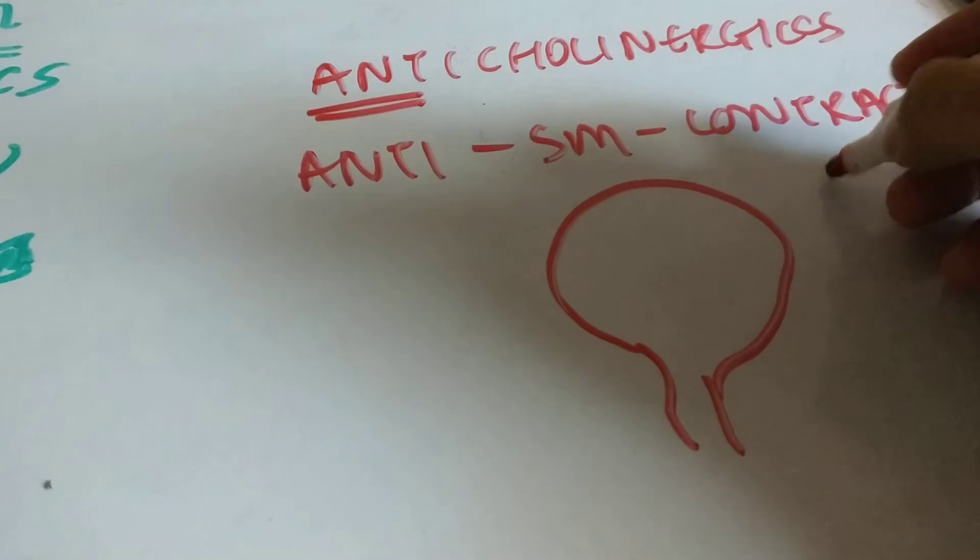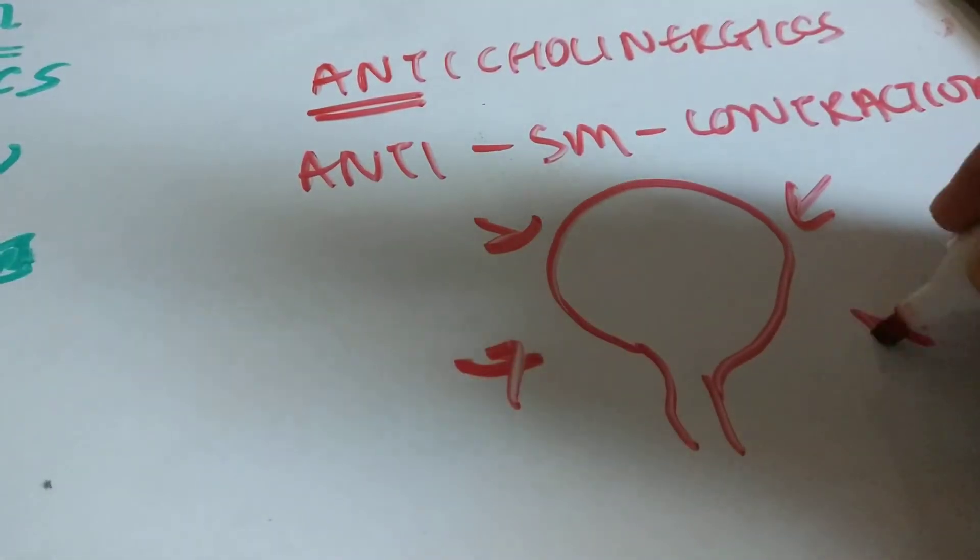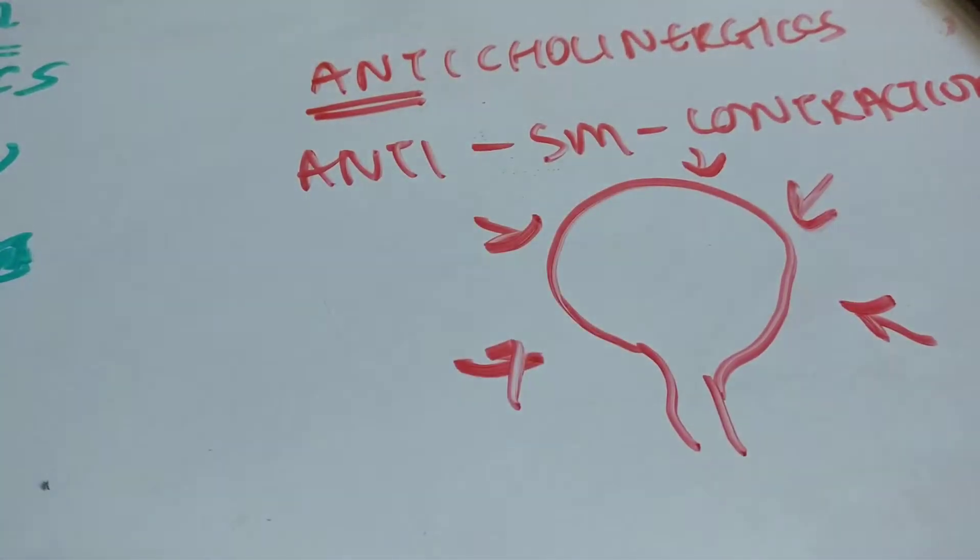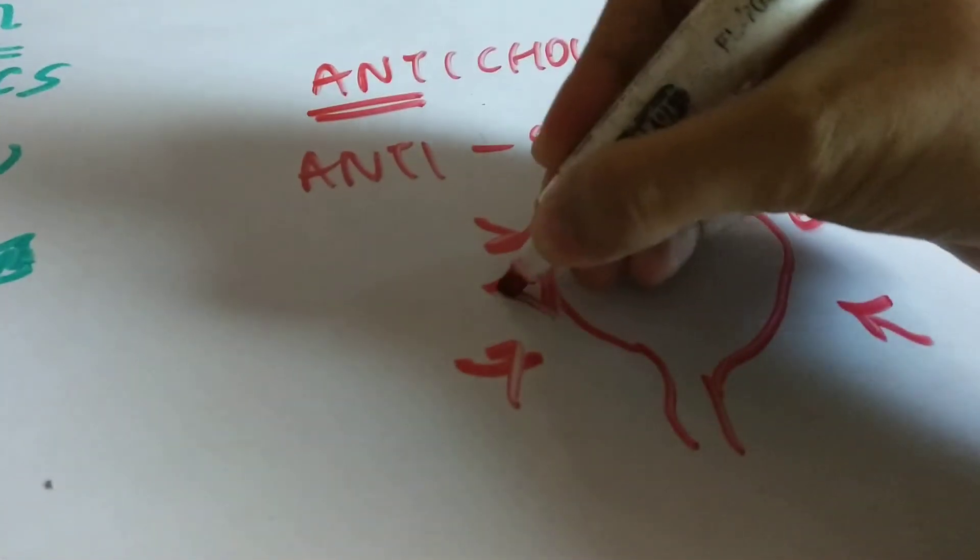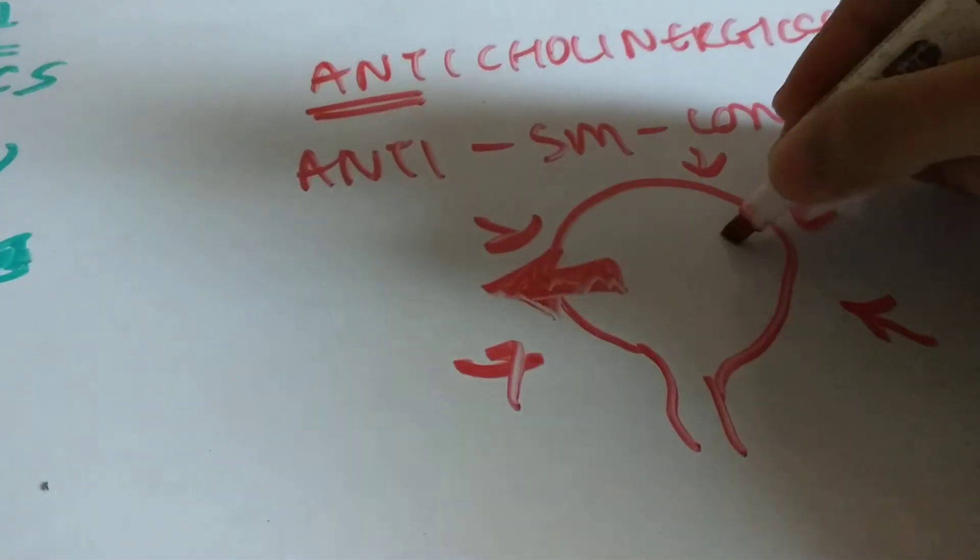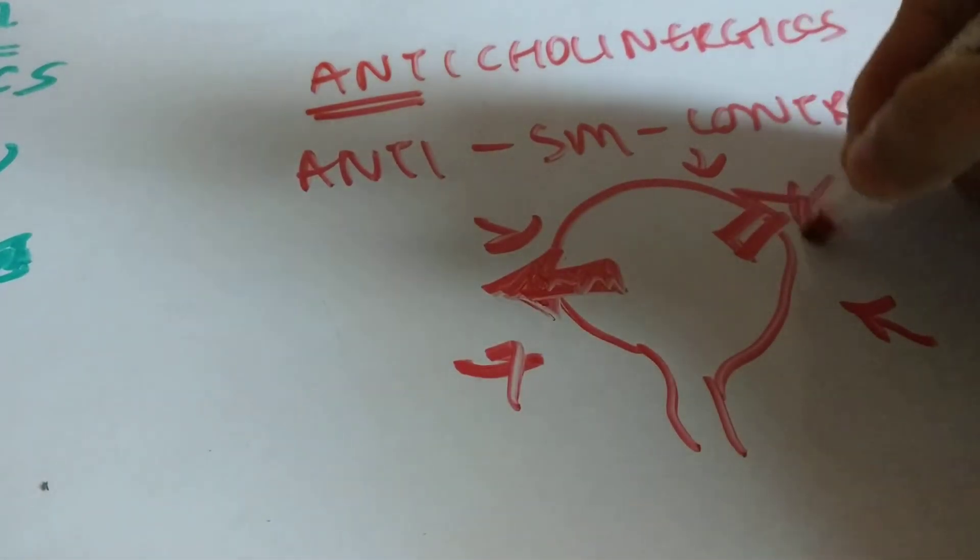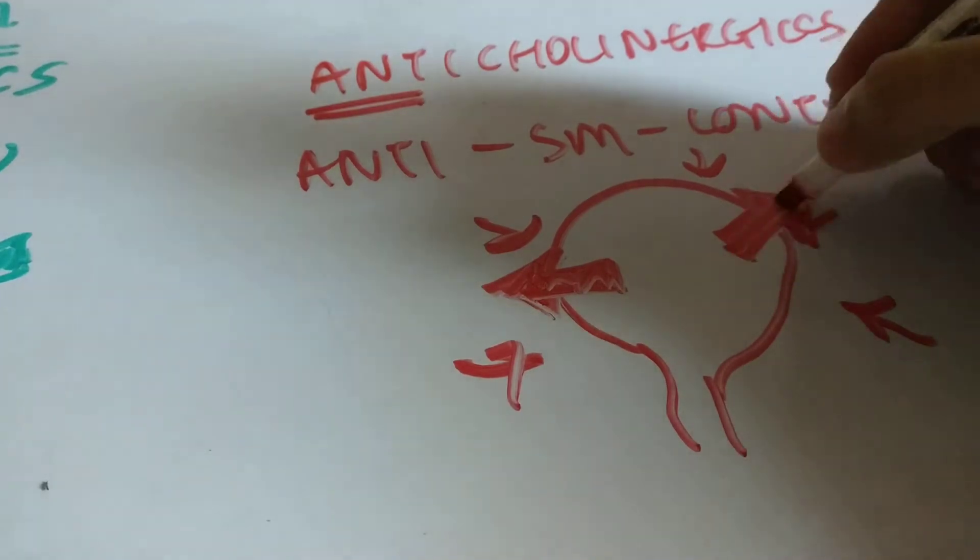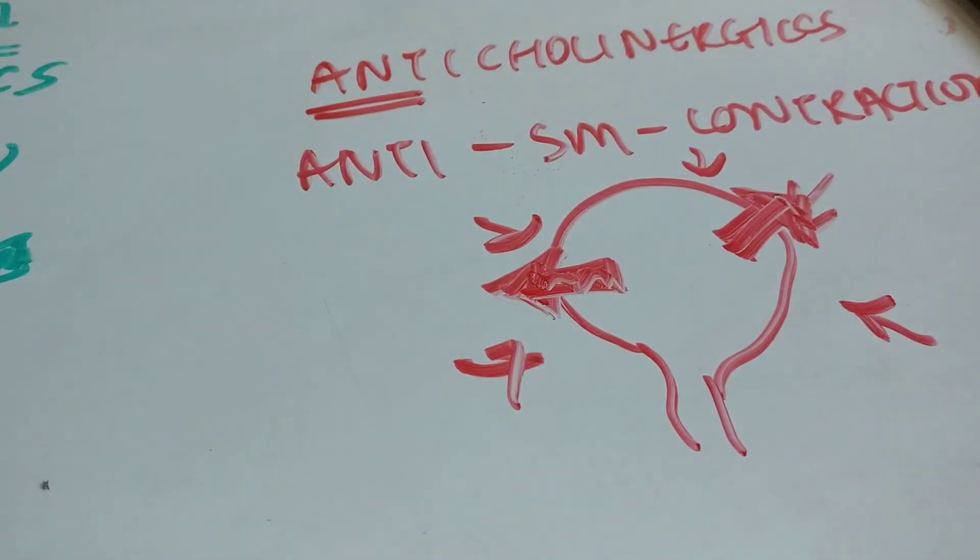If the bladder keeps contracting on its own because it's overactive, you would use an anticholinergic to inhibit these contractions and allow filling of the bladder.